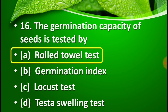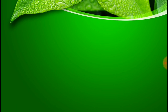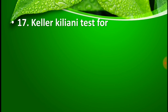Many students select germination index, but that is incorrect. The right answer is the roll towel test. So the answer for question 16 is option A. Moving on to question number 17: the Keller-Kiliani test is for — option A: digitoxose sugar present in digitalis.